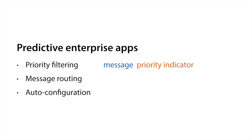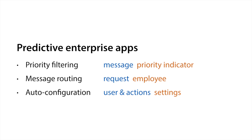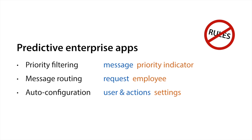For priority filtering, the input is a message and the output is a priority indicator. For message routing, you map the request to the employee who can reply in the best way. For auto-configuration, you have a user and their actions and you predict the best settings. The key point is that with machine learning you don't need to program these rules — they are learned automatically from data, saving a lot of time. And if the dynamics change, you can retrain another model and adapt. So it's more adaptive.